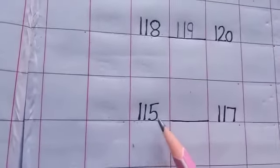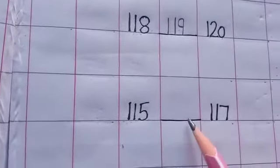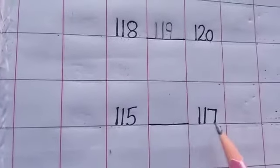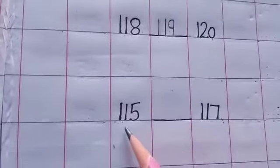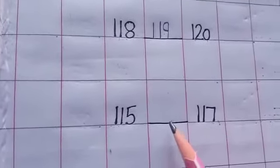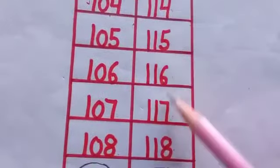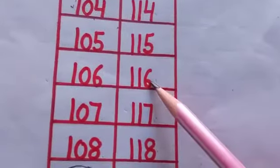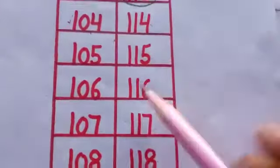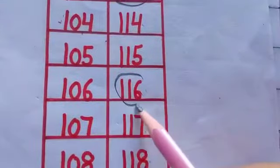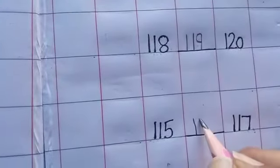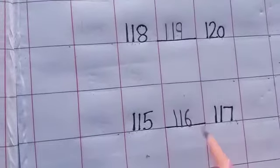Next. 115. Aap beech mein number aapko nahi diya gaya hai. 117. Tau, 115 and 117 ke beech mein between. Between. Kya number aayega? Look at here. 115 and 117. 115 and 117. Between. 116. Tau, hum yahan pe kya likhenge? 116. 115. 116. 117.